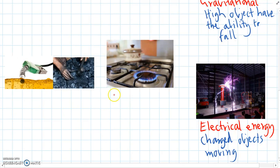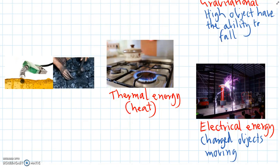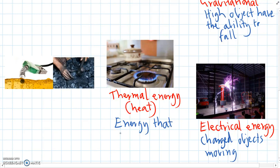Another type of energy is a really common one. The proper name is thermal energy, but that's really just heat. So anything that's hot, it has thermal energy, which transfers to a cold object that's nearby. So thermal energy is energy that moves from hot to cold.